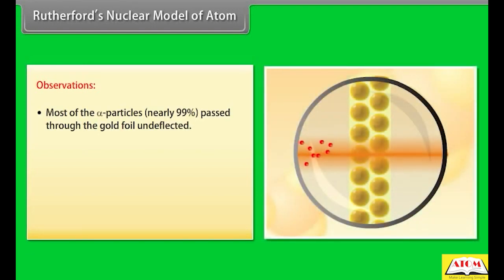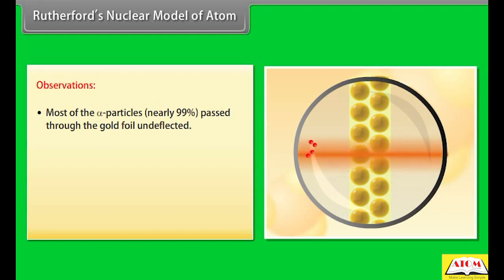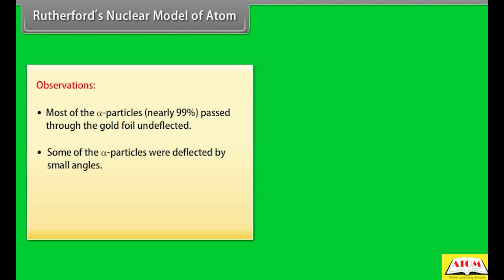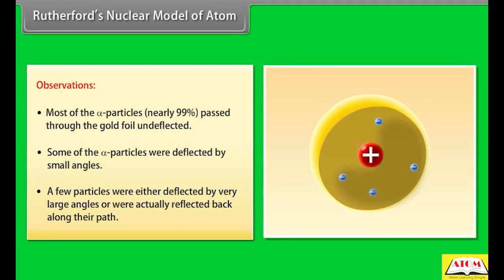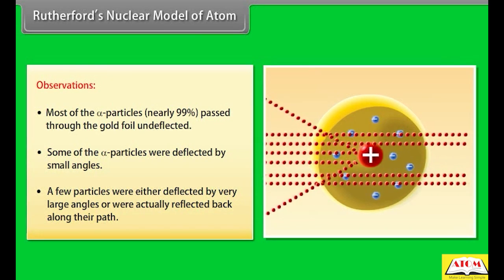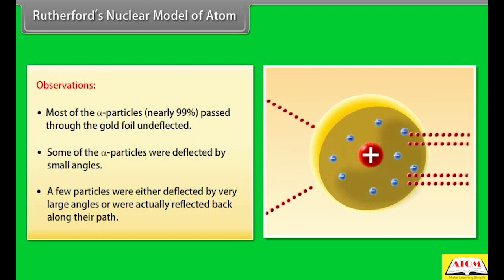Observations: 1. Most of the alpha particles — nearly 99% — passed through the gold foil undeflected. 2. Some of the alpha particles were deflected by small angles. 3. A few particles were either deflected by very large angles or were actually reflected back along their path.